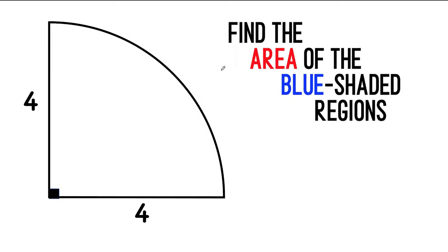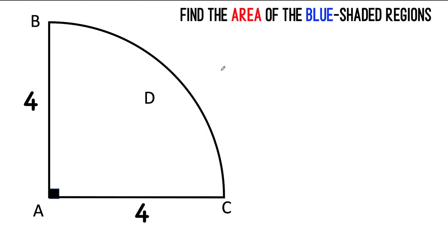Now let's solve this problem. Let's start by labeling the parts. So we have two semicircles and let their point of intersection be point D. This is point A, that's point B and that's point C.